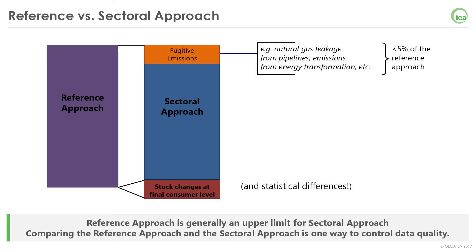If you are familiar with the energy balance, you know that it is composed of two main parts: the supply and the consumption parts. Therefore, the calculation of emissions can also be done from these two sides. We refer to them as the reference approach from the supply side and the sectoral approach from the consumption side. By definition, the sectoral approach should give a lower figure than the reference approach, because it does not include what is called fugitive emissions — that is, for example, gas flaring or gas leakage. However, stock change at the consumer level can have an impact as well. In general, comparing the two approaches is a good way to assess the quality of the data. For example, statistical differences will cause a difference between the two approaches' results.